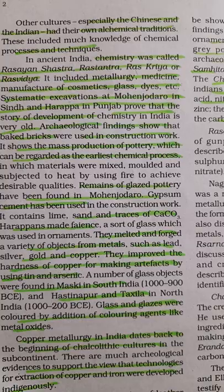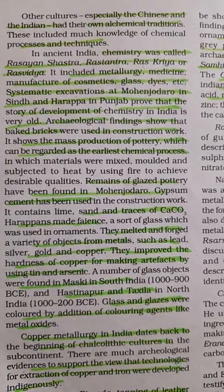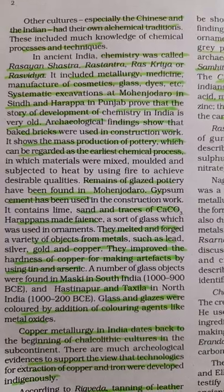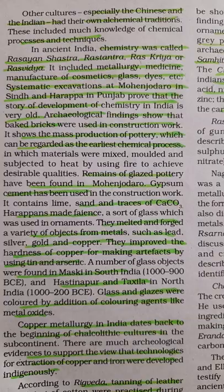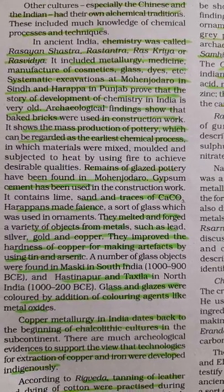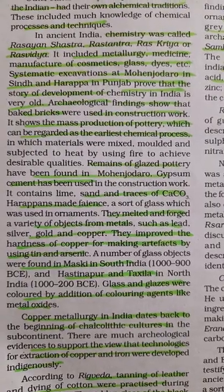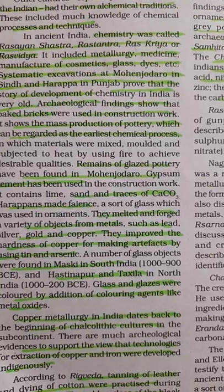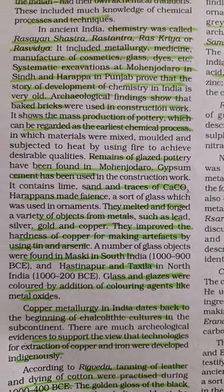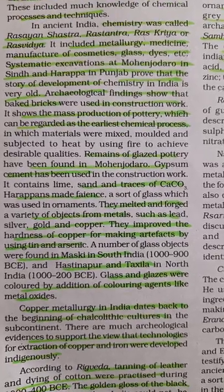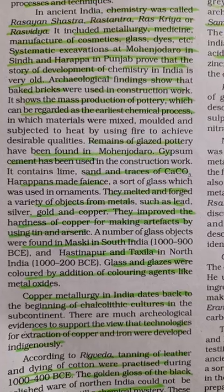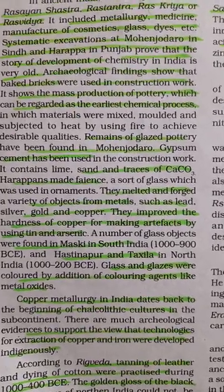The excavations at Mohenjodaro — which you may have learnt about in social studies — in Sindh and Harappa in Punjab have revealed very old artefacts. Archaeological findings show that baked bricks were used in construction work, and there is evidence of mass production of pottery, which is regarded as the earliest chemical process. Materials were mixed, moulded, and heated using fire to shape them. Remains of these potteries have been found in Mohenjodaro. Gypsum cement — containing lime, sand, and a little calcium carbonate — was also used in construction work.